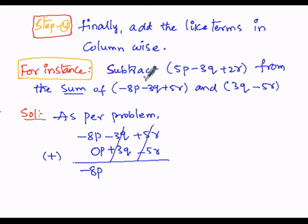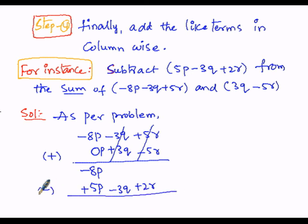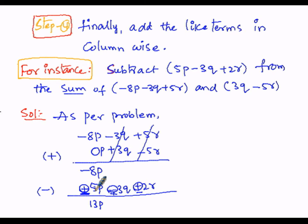From the resultant expression −8p, we now subtract 5p − 3q + 2r. We write 5p − 3q + 2r in the second row. To subtract, we change the signs: +5p becomes −5p, −3q becomes +3q, and +2r becomes −2r. Now, −8p and −5p: minus of minus is plus, so we add 8 + 5 = 13p.